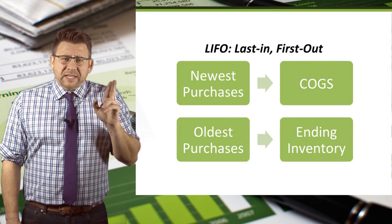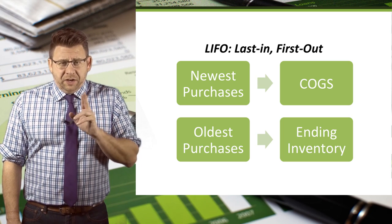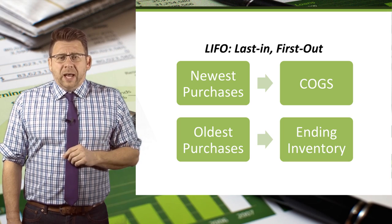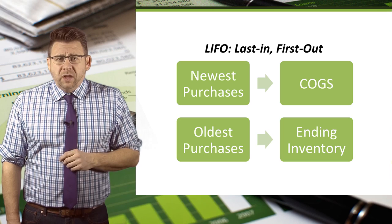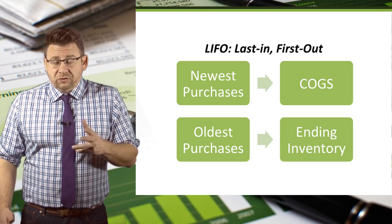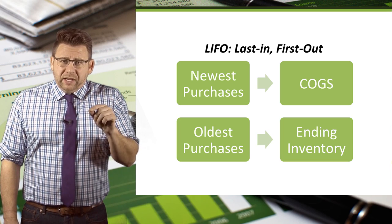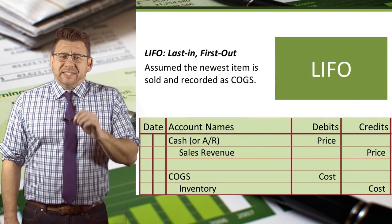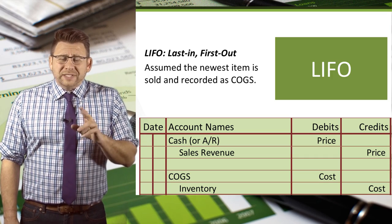LIFO is the opposite of FIFO. Under LIFO, which stands for Last In, First Out, ending inventory comes from the oldest costs, meaning the first purchased in the period. The cost of goods sold is based on the most recent purchases — those are the newest costs — and the last one in is the first one out of the warehouse. When a company makes a sale using LIFO, the cost of goods sold is assumed to be the newest item purchased.